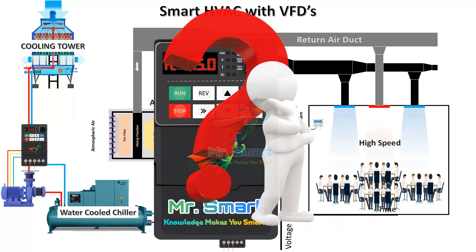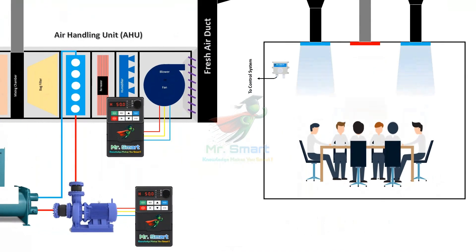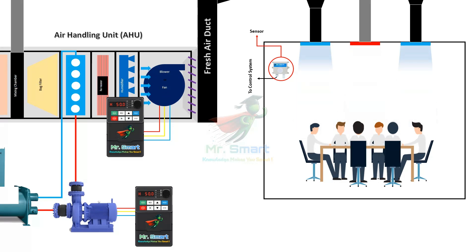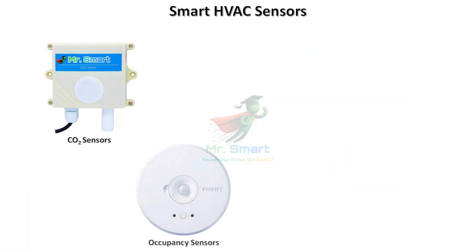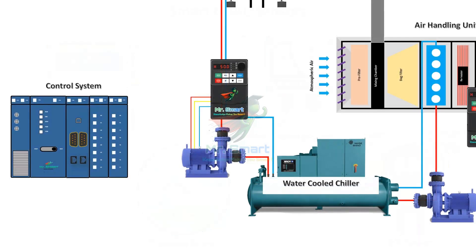So how does a VFD know if the room is actually filled or not? Sensors capable of monitoring conditions inside the room are installed — these are the eyes of a smart HVAC system. These sensors determine occupancy level by using CO2 levels inside the room, temperature, and humidity, and send signals to the control system.